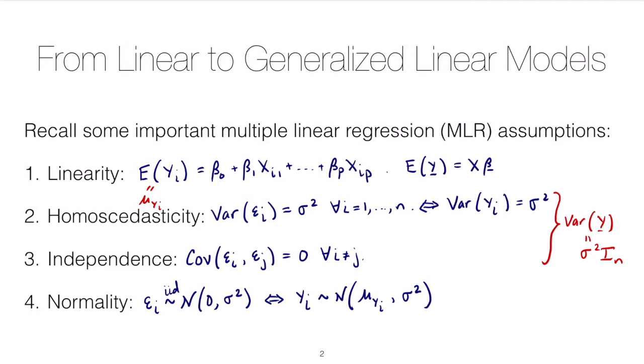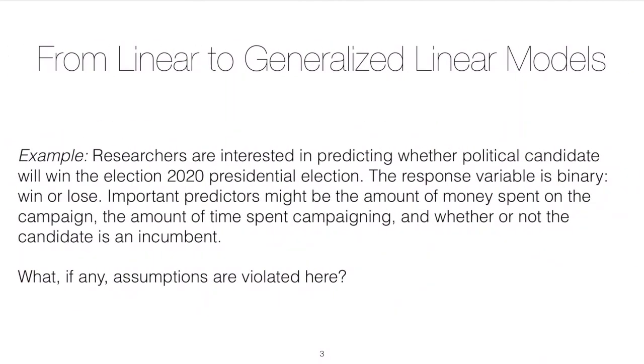Let's see what it would look like to break some of these assumptions in a specific way. So consider this example. Suppose you're a researcher and you're interested in predicting whether a political candidate will win the 2020 presidential election. So the response variable is binary in this case, either the politician wins or they lose. And important predictors might be the amount of money spent on the campaign, the amount of time spent campaigning, whether or not the candidate is an incumbent. Often incumbents have an advantage. And we might want to take these things into account when we try to predict.